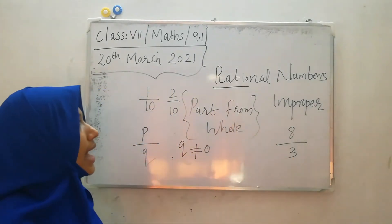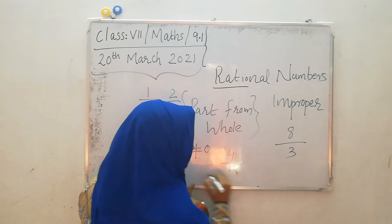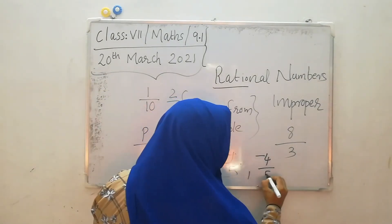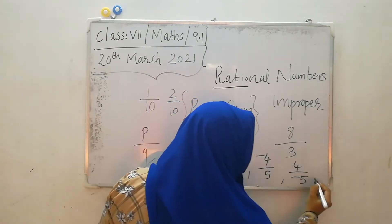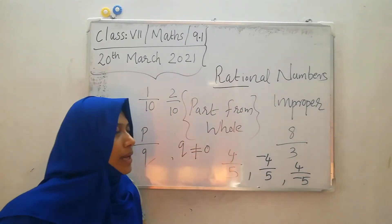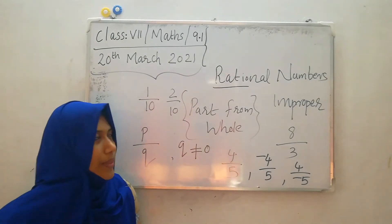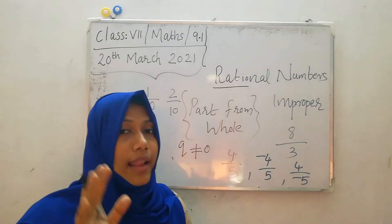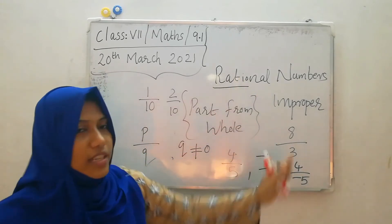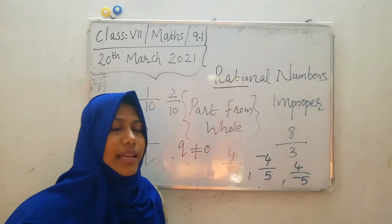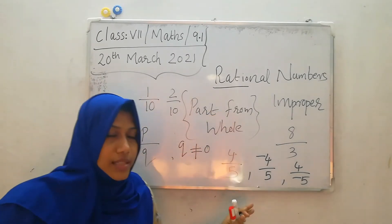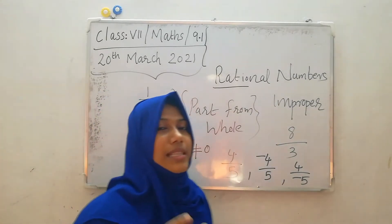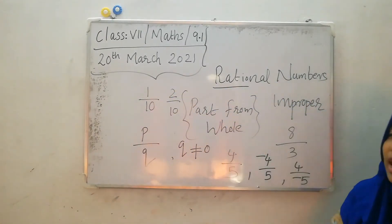We can classify rational numbers as positive rationals — where both are positive. A negative rational number means either the numerator or the denominator will be negative. Rational numbers can be positive or negative. But fractions are always positive, containing only whole numbers as numerator and denominator, while in rational numbers, numerators and denominators are integers — it can be positive rational or negative rational.